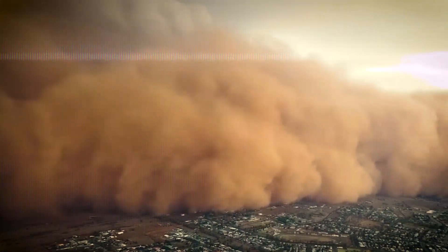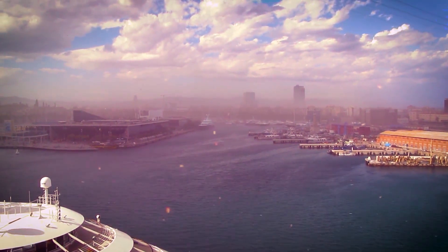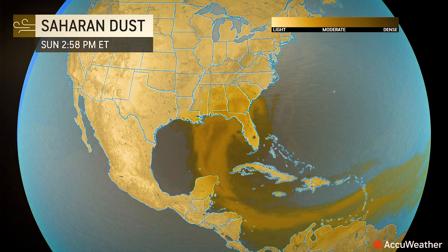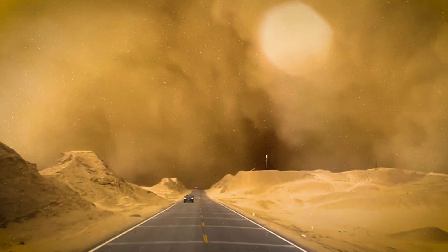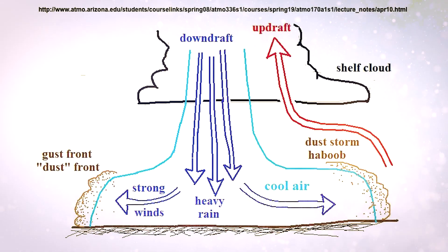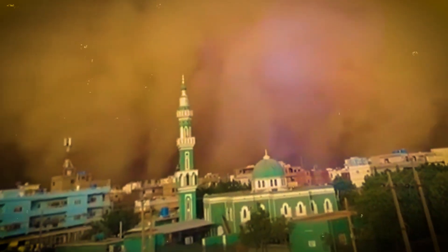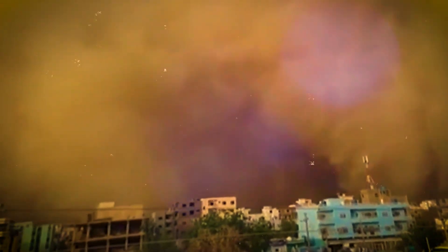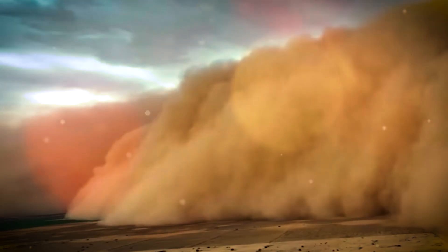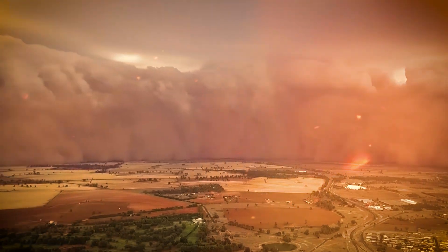Sometimes dust storms appear in places where people least expect them. Strong winds can carry fine dust hundreds or even thousands of kilometers from deserts to regions that normally have clean air. Dust from the Sahara has been detected over the Atlantic Ocean, reaching South America and occasionally even the southern United States. There are also special types of dust storms called haboobs. A haboob happens when strong winds from a thunderstorm push down to the ground and spread outward, lifting up huge walls of dust. These storms are common in parts of Africa, the Middle East, and the southwestern United States, especially around Arizona and New Mexico, and often look like a solid wall of sand moving quickly across the landscape.